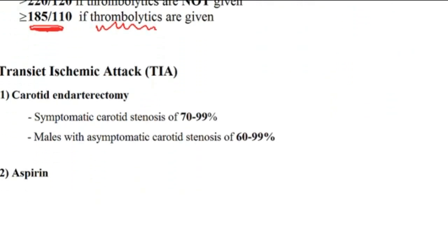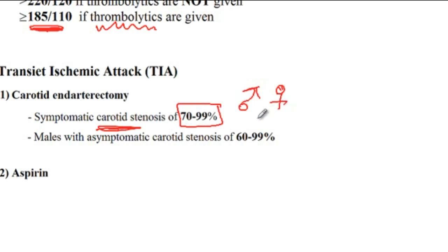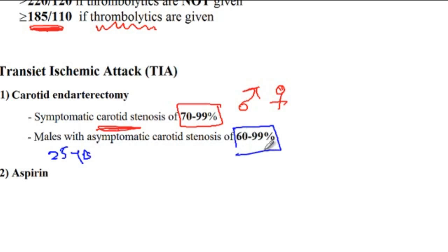If the patient has TIA, potential treatment options include carotid endarterectomy. If there is carotid stenosis of 70 to 99%, whether male or female, it's recommended to proceed with carotid endarterectomy to remove the plaques inside the carotid artery. Since males respond better to the procedure, it's recommended that males with life expectancy of more than five years who are asymptomatic but have stenosis of more than 60% also proceed with carotid endarterectomy.